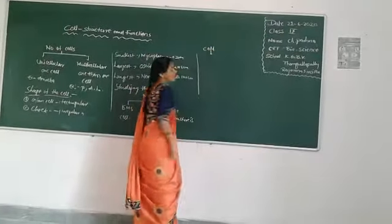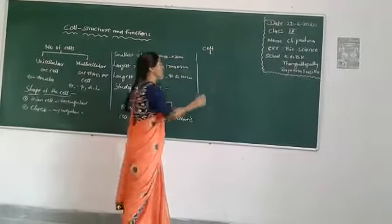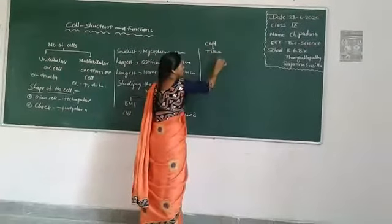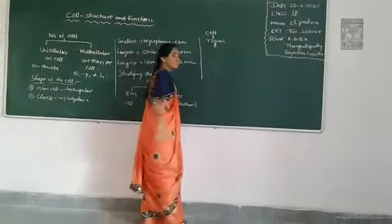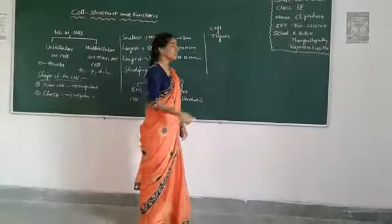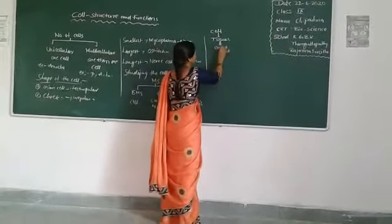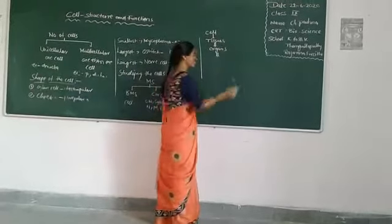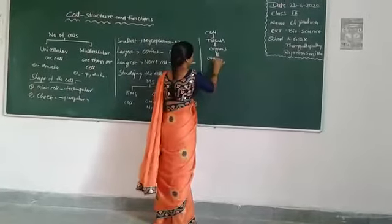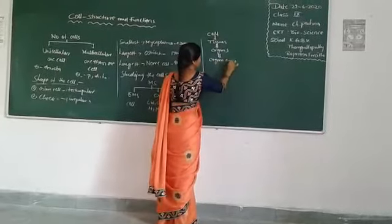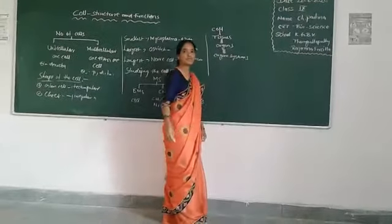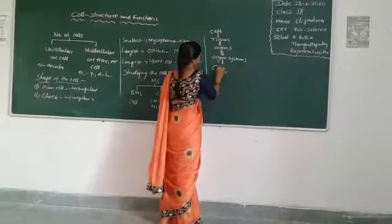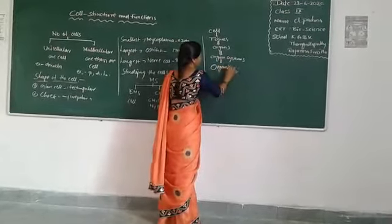Starting from the cell: more than one cell is called tissues. Tissues make up organs. Organs make up organ systems. Organ systems make up living organisms.